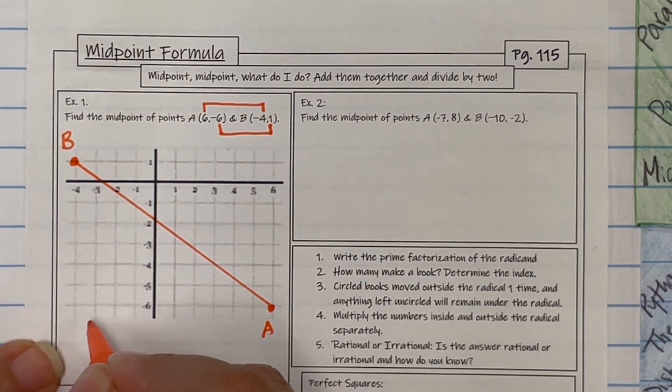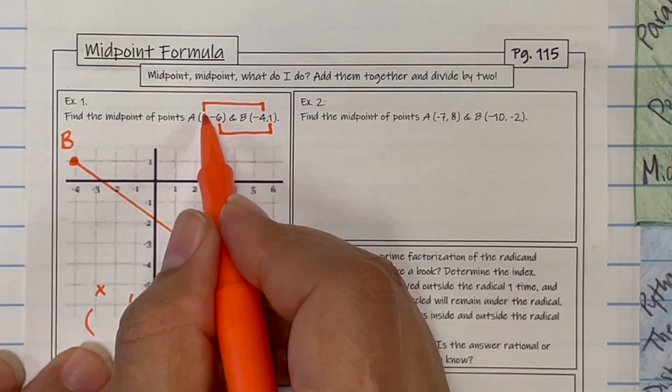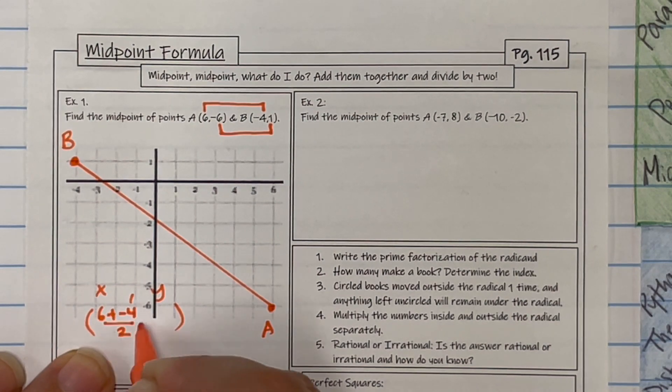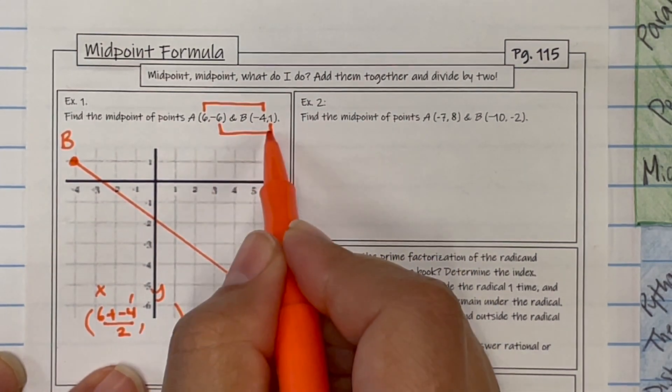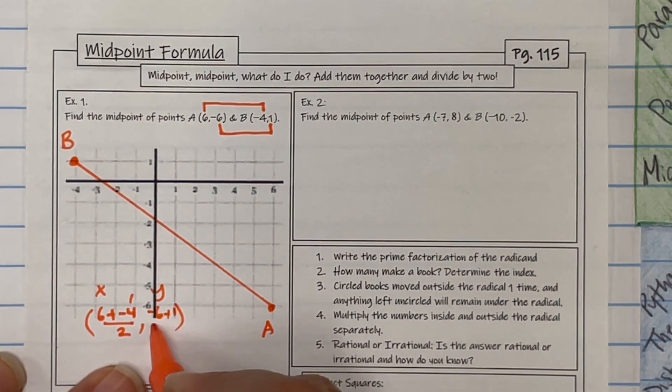So for the x value, it has to go x and then y, right? You're going to add the x's. So that's 6 plus negative 4 divided by 2. And add the y's and divide by 2: negative 6 plus 1 divided by 2.